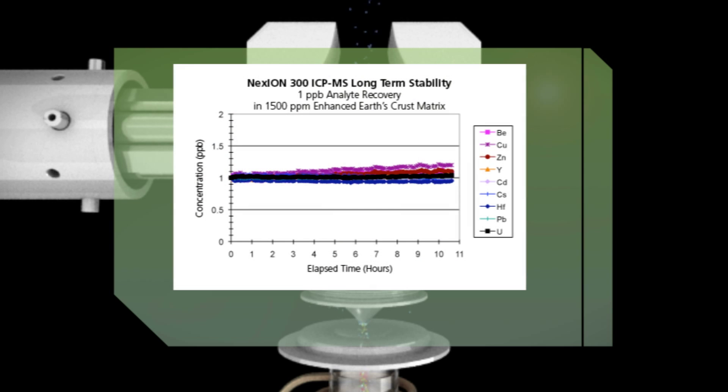Together, the triple cone interface and quadrupole ion deflector remove such a large proportion of unionized material that signal responses can be maintained for hours, even when running the most challenging matrices. They also make the Nexion 300 the only ICP-MS available with a cell that never needs cleaning or replacing.